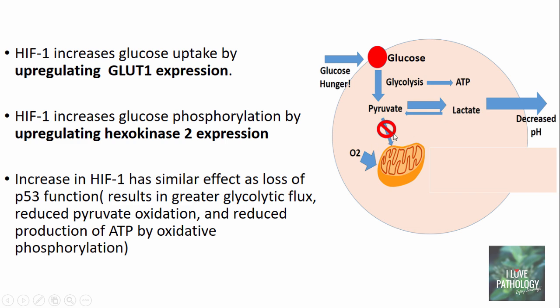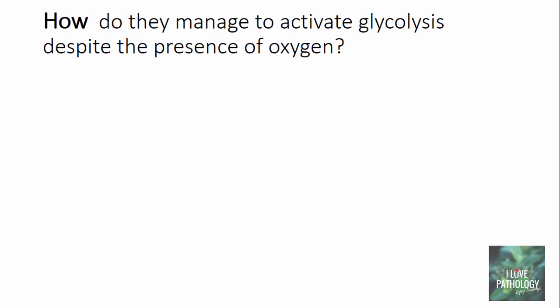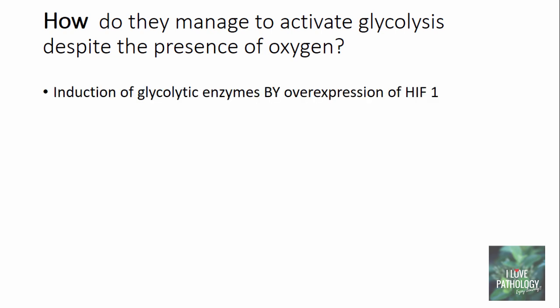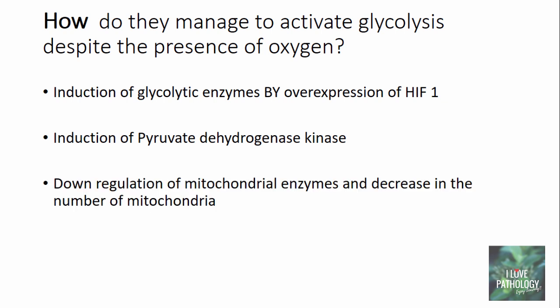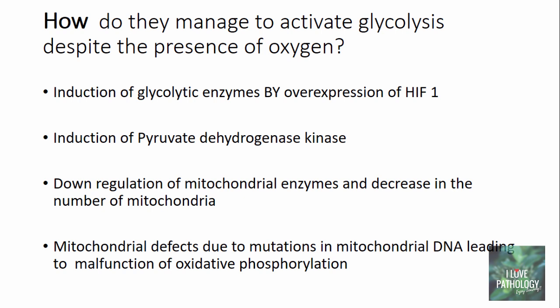What really happens in that third mechanism is increased induction of pyruvate dehydrogenase kinase, which prevents the oxidation of pyruvate. In summary, glycolysis is activated by: induction of glycolytic enzymes through overexpression of HIF1, and induction of pyruvate dehydrogenase kinase which reduces pyruvate oxidation. Other explanations include downregulation of mitochondrial enzymes, decrease in the number of mitochondria, and mitochondrial defects due to mutations in mitochondrial DNA, leading to malfunction of oxidative phosphorylation.